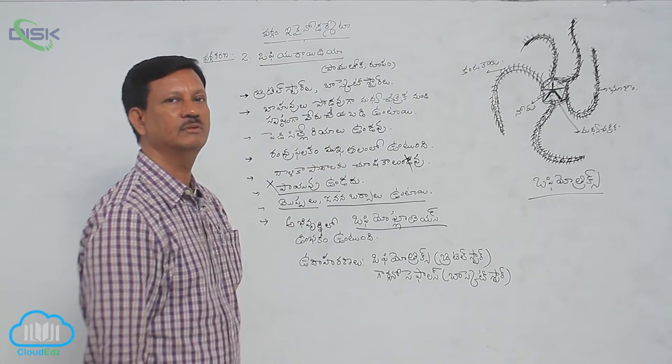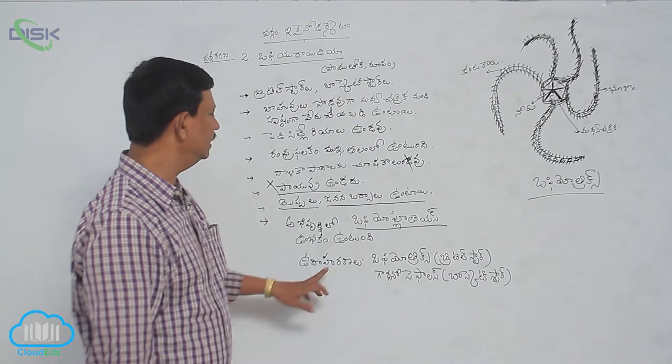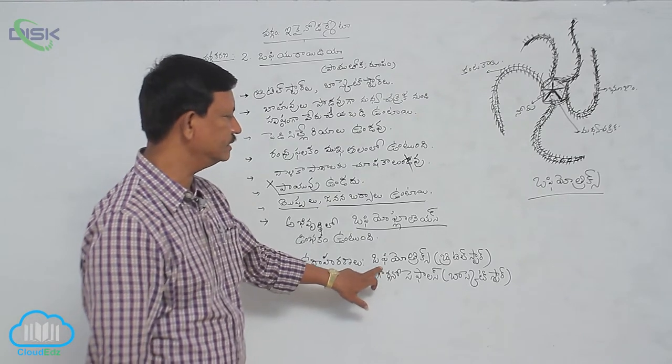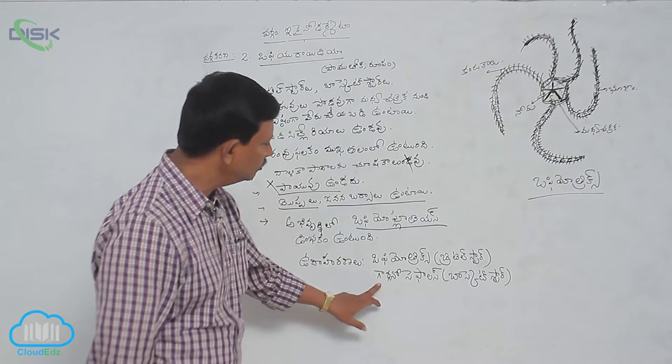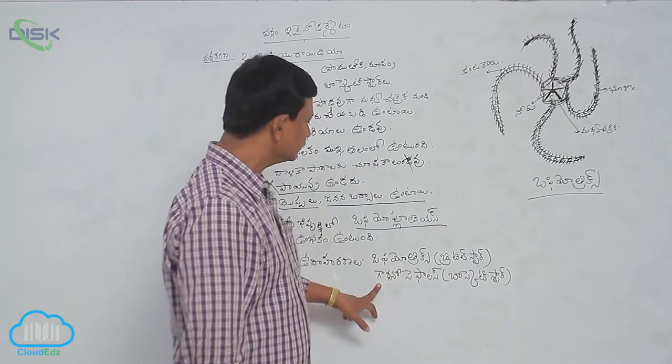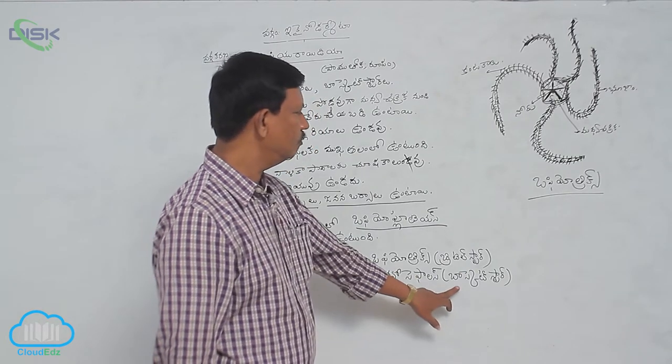Examples living in this class include Ophiothrix and Gorgonocephalus, which is called the Basket Star.